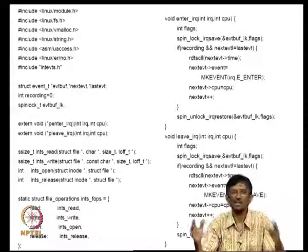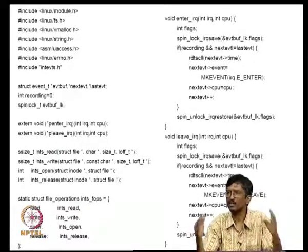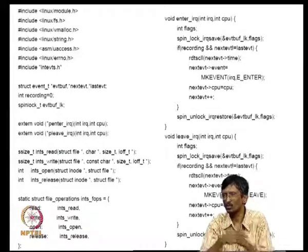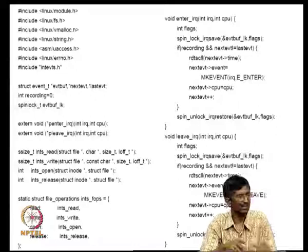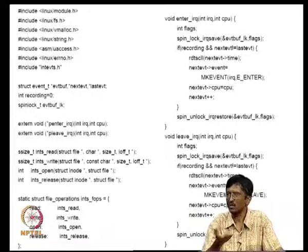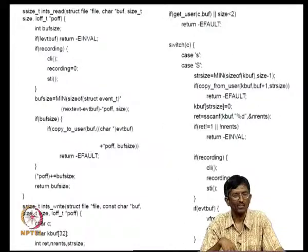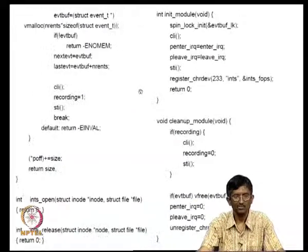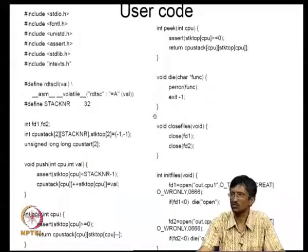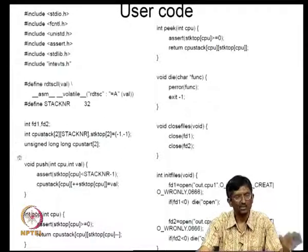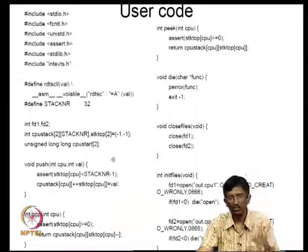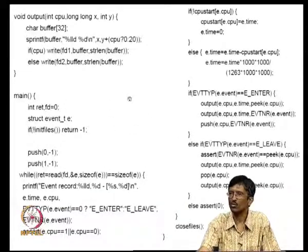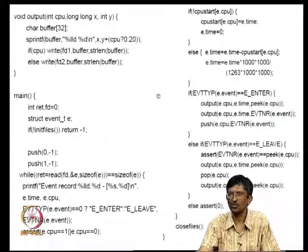The trace of all interrupts is now captured in kernel virtual (pageable) memory until someone tries to read it. The read is performed through user code: the main user-space program does a read on fd 0, which is redirected from /tmp/intest, calling the driver's read routine.